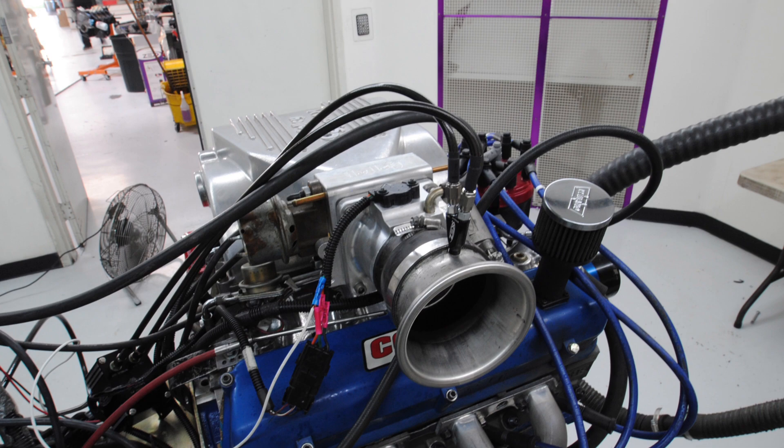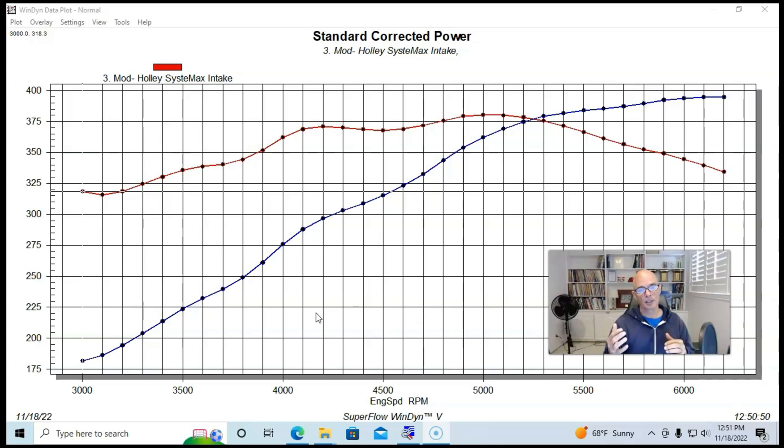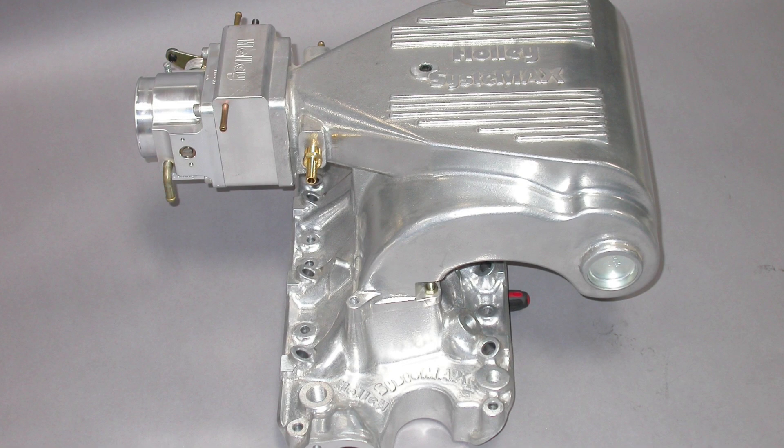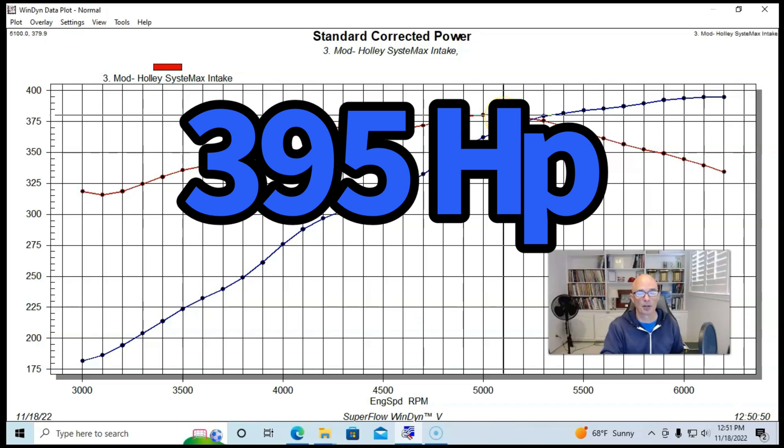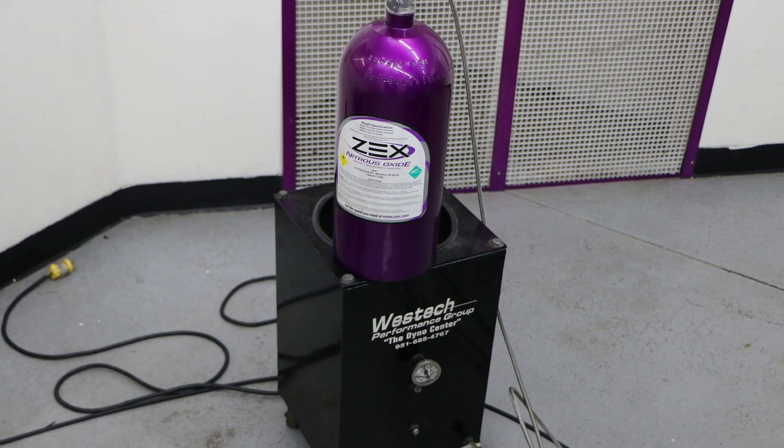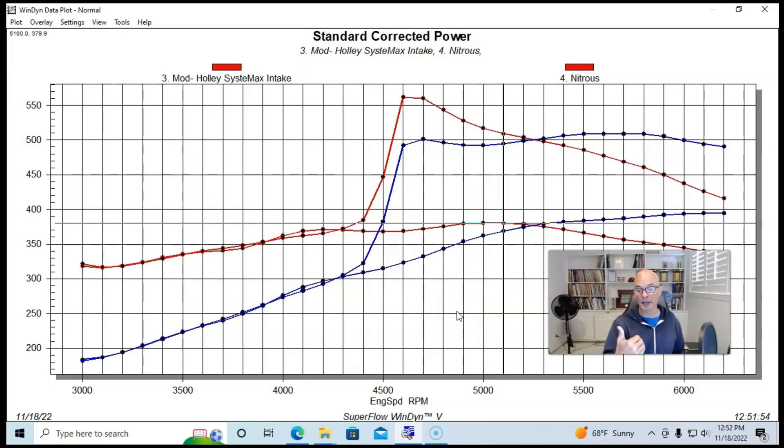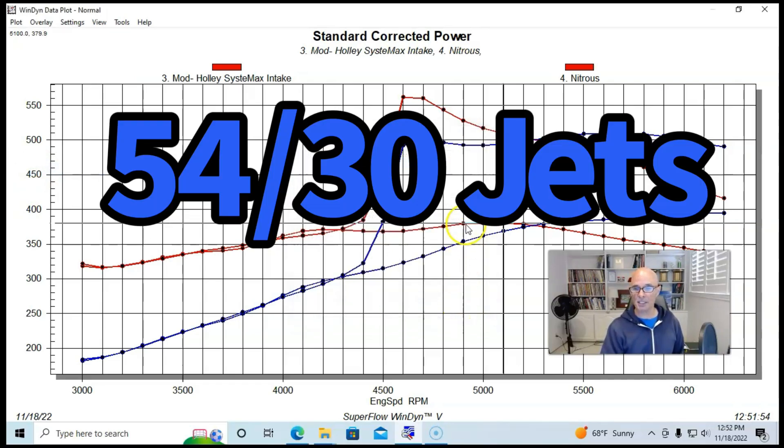Next up on the list for our 274 cam is to find out how well it works with nitrous. And for this, we're going to look back at the combination that we put together, our NA version. This was our 306 with the 274 cam. It had the RHS ported CNC heads and the Holley ported Systemax intake manifold with the 75-millimeter AccuFab throttle body. So we ran this thing naturally aspirated, made 395 horsepower and 380 foot-pounds of torque. And here's what happened after we added nitrous to it. In this case, this was a Zex wet EFI kit, meaning it had a single fogger positioned in front of the throttle body and the single fogger fed both nitrous and fuel into the setup.